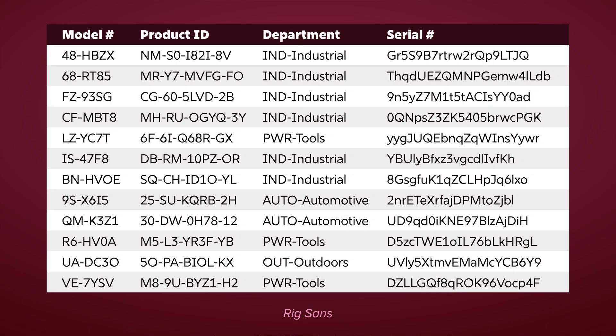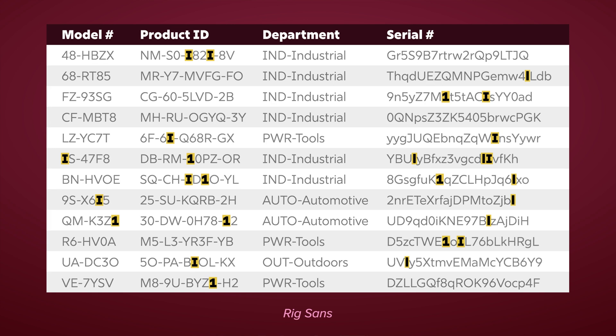As another example, let's say you're designing a complex data table with several rows and columns of data. Using a typeface with distinct characters will help users more easily understand and differentiate the information they're looking at. Let's look at a table with several columns — model number, serial number, and product ID — all using alphanumeric characters, each with its own sequence of numbers. This first version clearly distinguishes between ones and capital I's, which speeds up comprehension.